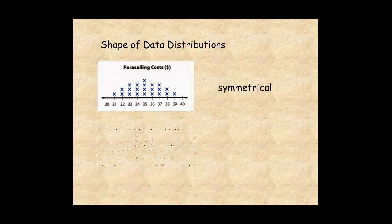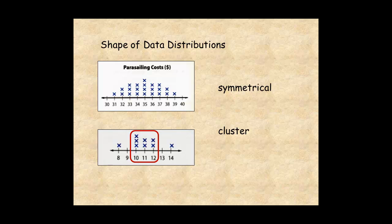This dataset is not symmetrical. It has a cluster of data values between 10 and 12. The gaps 9 and 13 have no data values, and the value 10 is a peak, because it's the most frequently occurring value.